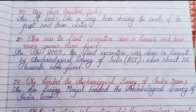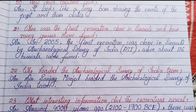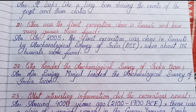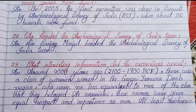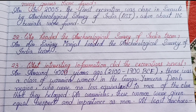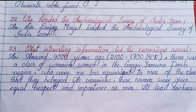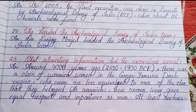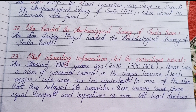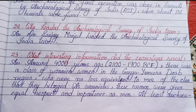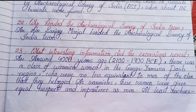Number twenty-one: When was the first excavation done in Senauli and how many graves were found? In 2005, the first excavation was carried out in Senauli by the Archaeological Survey of India (ASI), when about 116 burials were found. Number twenty-two: Who headed the Archaeological Survey of India team? Dr. Sanjay Manjul headed the Archaeological Survey of India team. Number twenty-three: What interesting information did the excavation reveal? Around 4,000 years ago, 2100 to 1900 BCE, there was a class of warrior women in the Ganga-Yamuna Doab region who were no less equivalent to men of the clan they belonged to — as warriors, these women were given equal respect and importance as men.